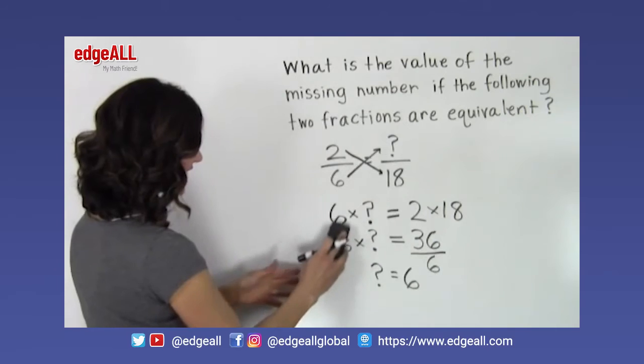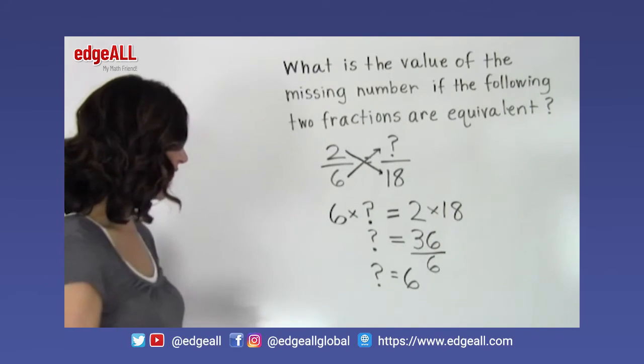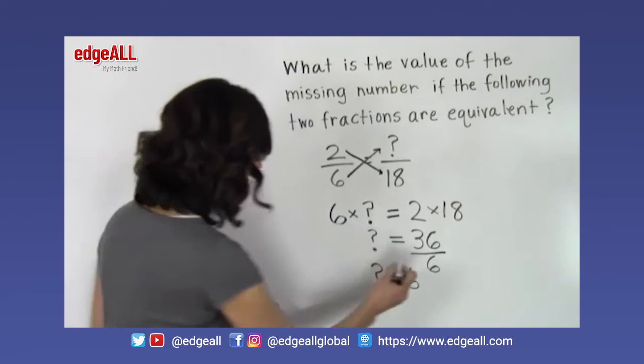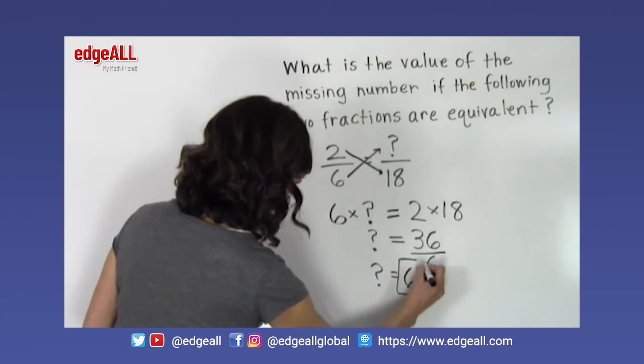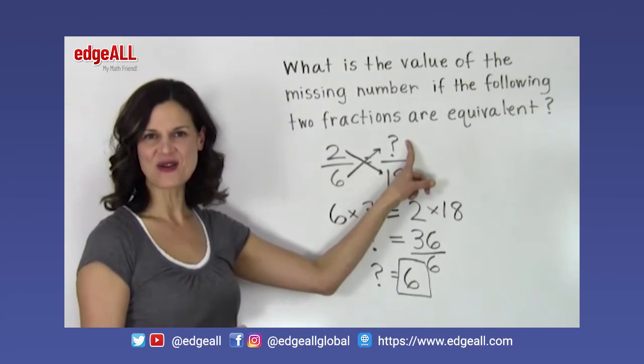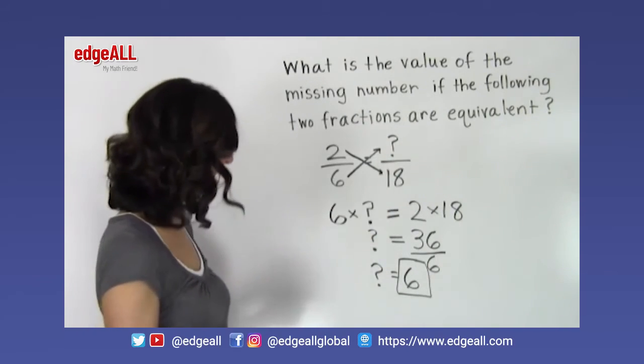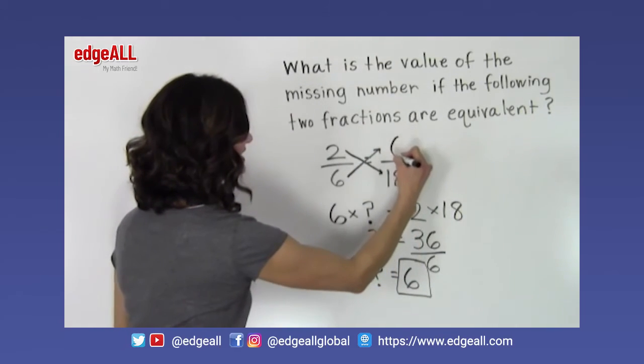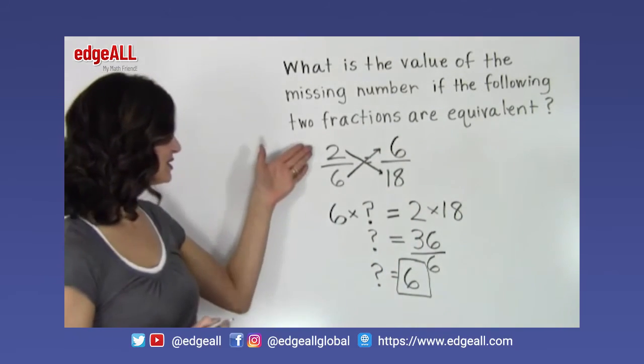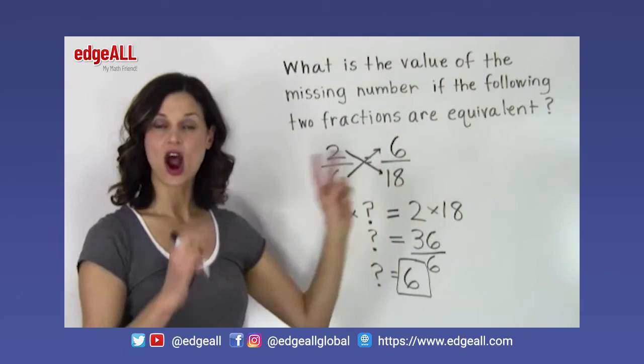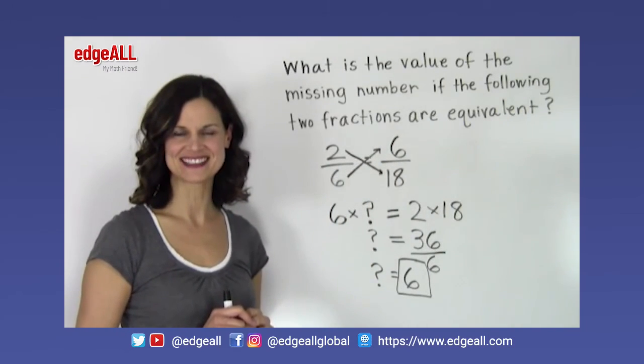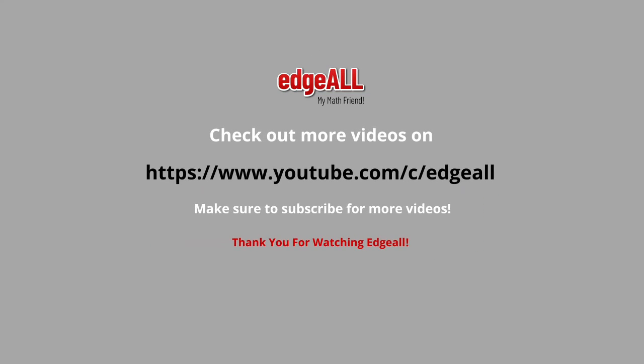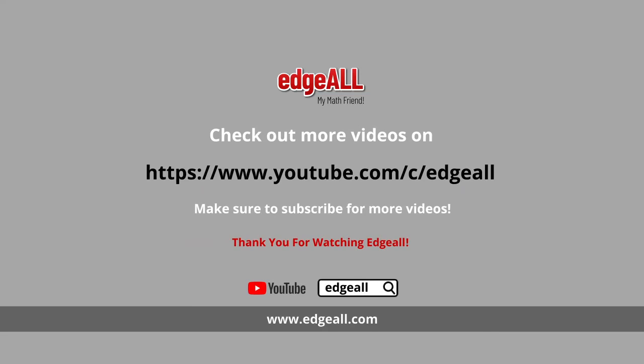So as soon as I divide that side by 6, I can take this 6 away and have my question mark equals 36 divided by 6. And so the number that we're looking for, this unknown numerator, we can write it in now. It's the number 6. So 2 6ths and 6 18ths are equivalent fractions.